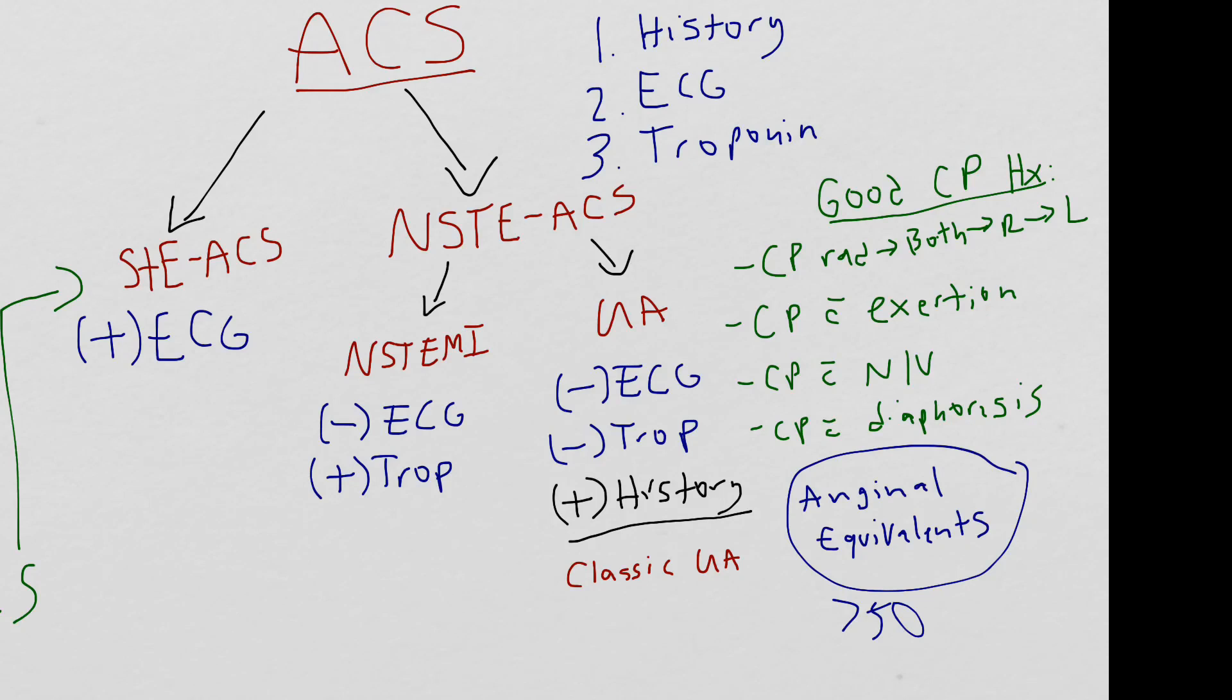But we don't want to get carried away with these anginal equivalents. It doesn't mean that I routinely get EKGs and troponins on 25-year-olds who have isolated nausea, vomiting that's not abdominal or neurologic. Again, we have to think about this in the right patient population. And I typically start thinking about anginal equivalents when patients are over 50, maybe a little younger if they have a lot of comorbidities that can put somebody at risk for accelerated coronary artery disease.